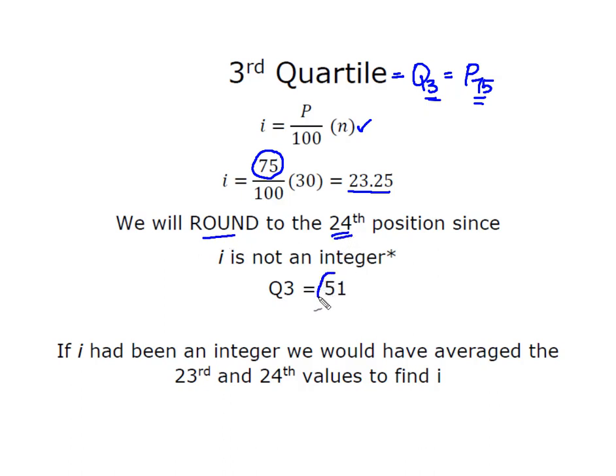Since this is not an integer, I'm going to round to the 24th position. I start at the top, and when I come down, I find that the number in the 24th position is 51. Again, if i had been an integer, then I would have averaged the 23rd and the 24th values. It just matters whether or not the result of this piece of math for i is a whole number or not as to whether or not you round.